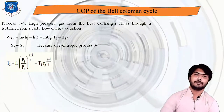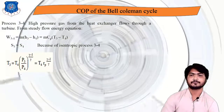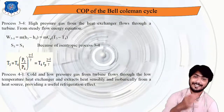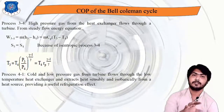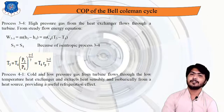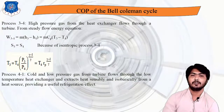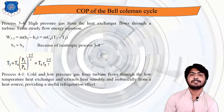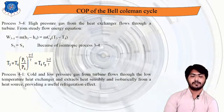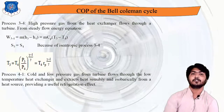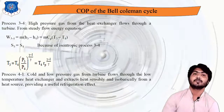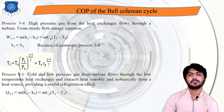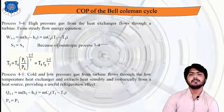In process 4 to 1, cold low-pressure gas from the turbine flows through the low-temperature heat exchanger and extracts sensible heat isobarically (at constant pressure) from the heat source, providing the useful refrigeration effect. Applying SFEE: Q41 = m(H1 − H4) = mCp(T1 − T4), and P4 = P1 since it is an isobaric process.